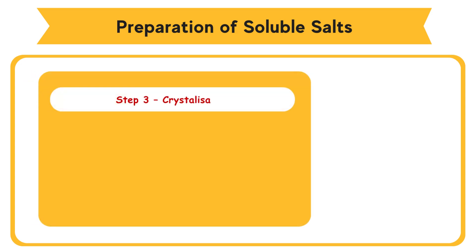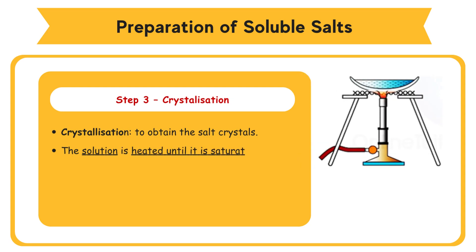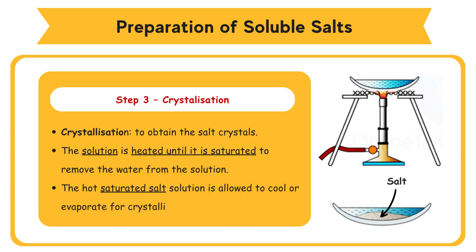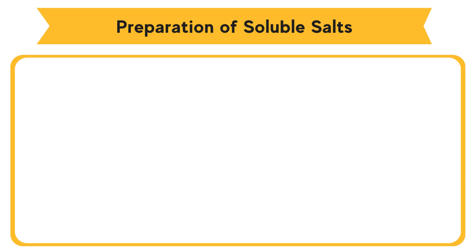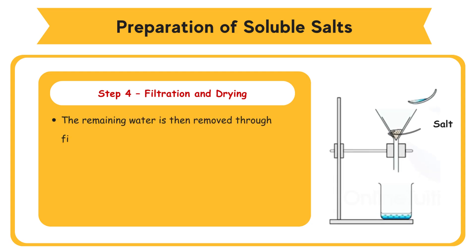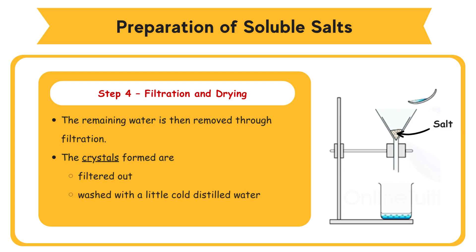Step 3 — Crystallization. Crystallization is carried out to obtain the salt crystals. The solution is heated until it is saturated to remove the water from the solution. The hot saturated salt solution is allowed to cool or evaporate for crystallization to take place. Step 4 — Filtration and drying. The remaining water is then removed through filtration. The crystals formed are filtered out, washed with a little cold distilled water, and dried between sheets of filter paper.